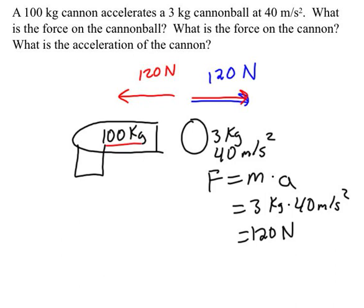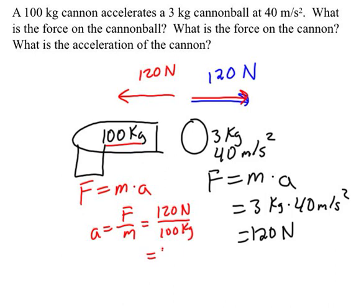We also know the mass of the cannon, so from that we can find its acceleration. Because F equals M times A — this is for the cannon now. Solving for A, we get A equals force divided by mass: 120 newtons divided by 100 kilograms, which equals 1.2 meters per second squared.